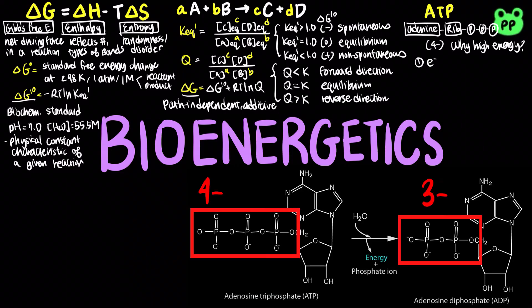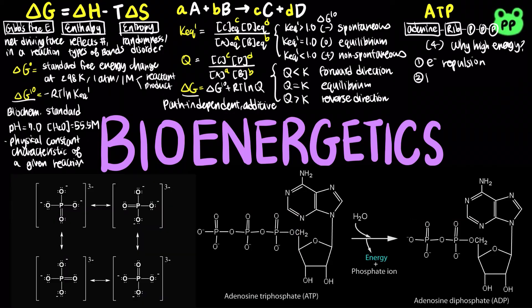First, the charge separation that results from hydrolysis relieves electrostatic repulsion among the four negative charges on ATP. Second, the product of inorganic phosphate is stabilized by the formation of a resonance hybrid in which each of the four phosphorus-oxygen bonds has the same degree of double bond character.